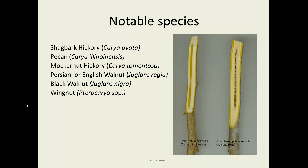Pecan and mockernut hickory are two other popular species of Carya. Persian or English walnut, Juglans regia, is in the same genus as black walnut, which does grow in Iowa. There's also the wingnut, Pterocarya. Interestingly, if you don't have nuts or flowers to distinguish between a walnut and a hickory, you can cut a slice through a twig: if you see chambers you'll probably have a walnut, and if you don't see chambers, you'll probably have a hickory.